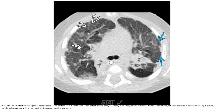Another case: a non-contrast CT in an infant with congenital heart disease, showing large secondary pulmonary lobules of variable size, varying lobular reticular opacity, and subpleural changes typical of alveolar growth abnormality.